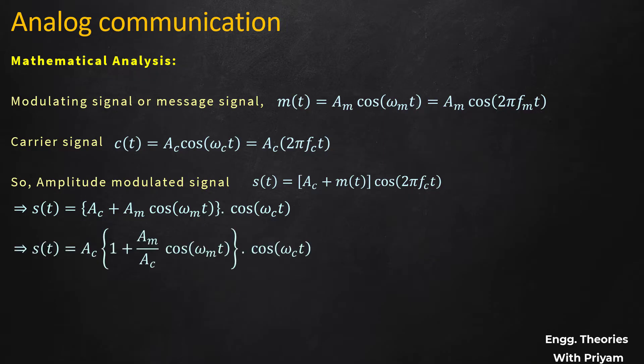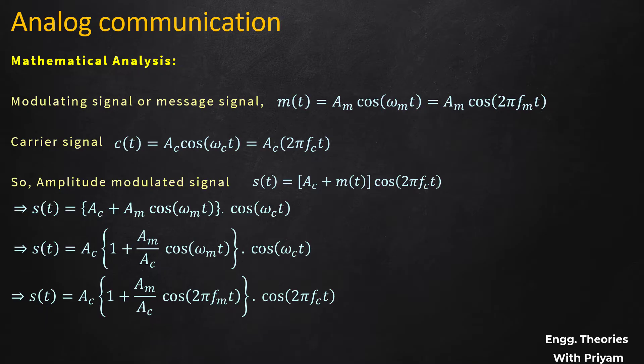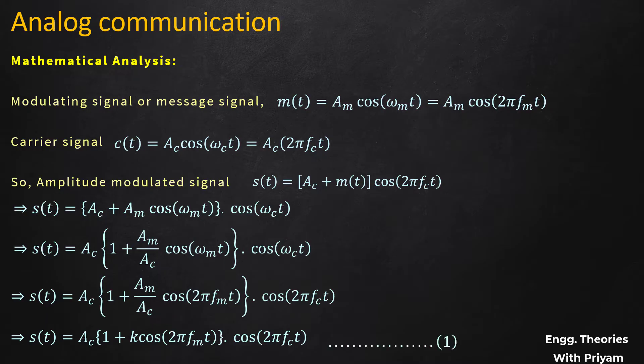Taking Ac common, s(t) can be written as Ac·[1 + (Am/Ac)·cos(ωm·t)]·cos(ωc·t). Replacing ωc by 2π·fc and ωm by 2π·fm, and letting k = Am/Ac, the equation of the modulated signal becomes s(t) = Ac·[1 + k·cos(2π·fm·t)]·cos(2π·fc·t). This is Equation 1.